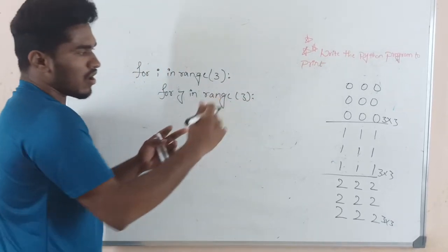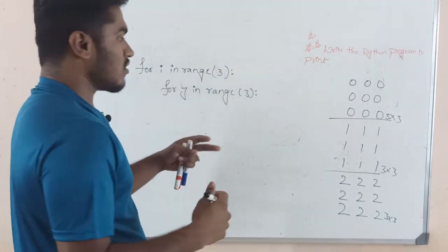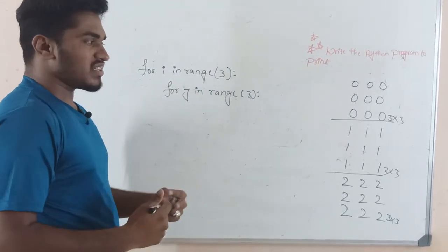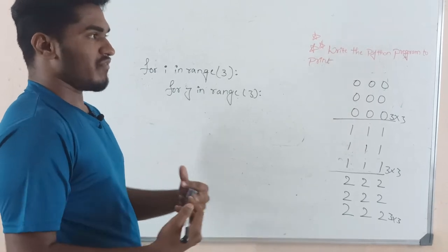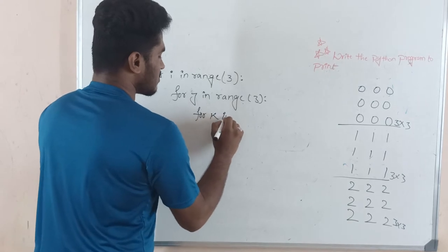3. We also have three columns for each matrix, right? So next we are introducing the intermediate variable. The variable is k. For k in range 3, we are going to print this i value. The i value starts from zero, one, two, three, and so on.